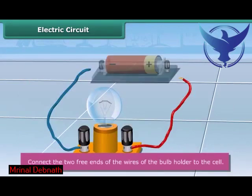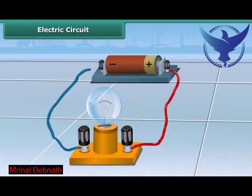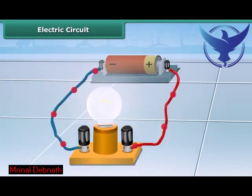Finally, connect free end of one wire to the positive terminal of the cell and free end of the other wire to the negative terminal of the cell. This may be done with the help of a rubber band or an adhesive tape. After the connection you can see that the bulb lights up.